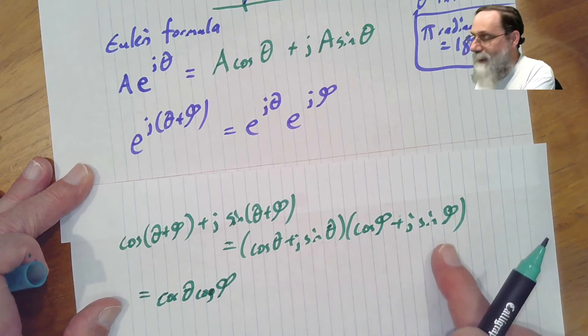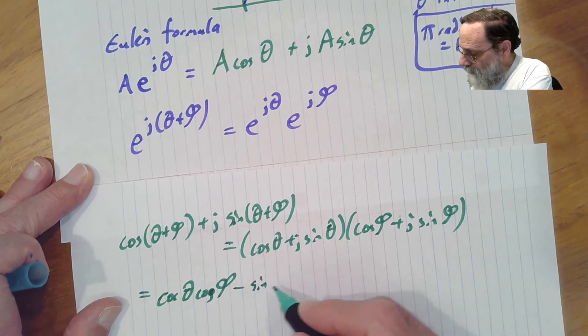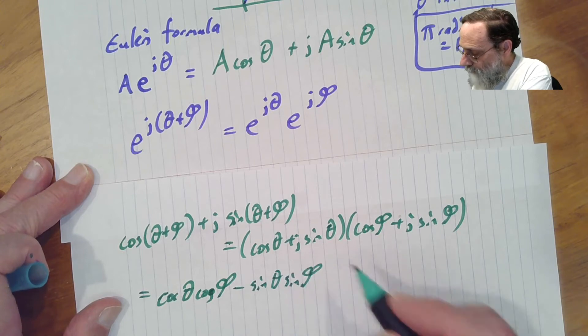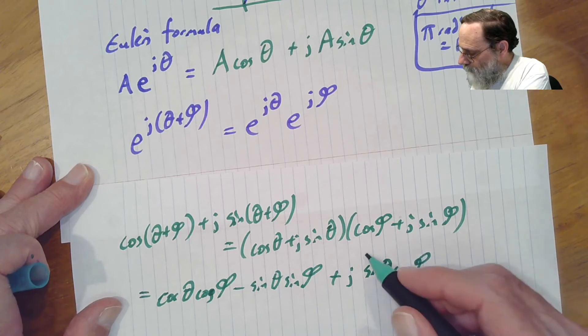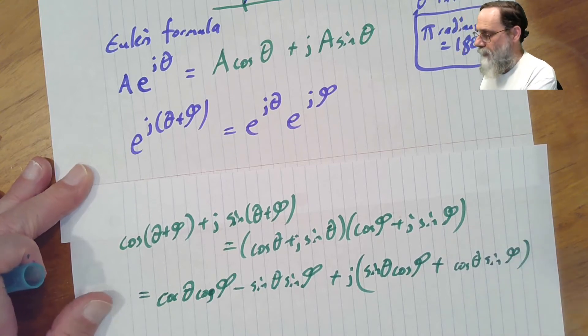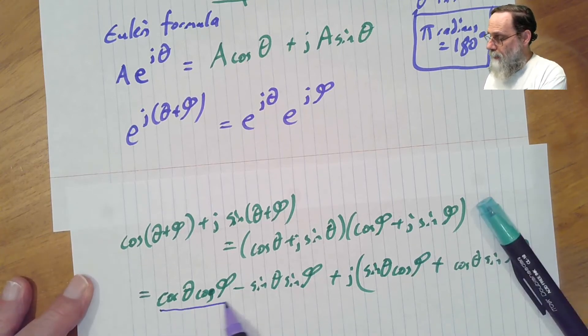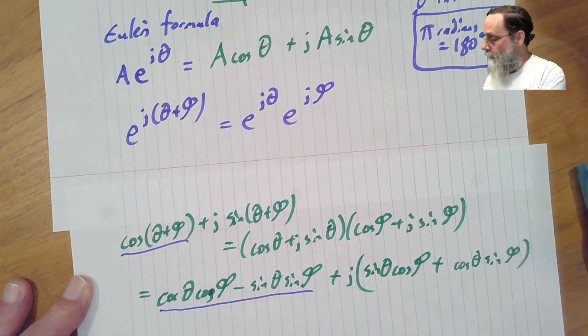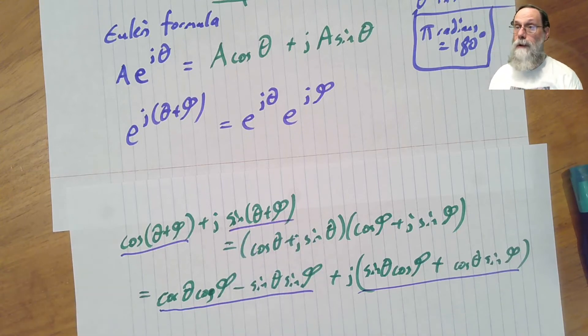And then, now I'll do the two imaginary parts. The j times j is minus one. So I'm just going to get minus sine theta, sine phi. And now I'll do the two cross terms. So I'll have j times sine theta cosine phi, and I'll also have cosine theta sine phi. And what we've got here is the real part is equal to the real part there. The imaginary part here is equal to the imaginary part here. And we've got the formulas, the trigonometric formulas, for cosine of adding two angles or the sine of adding two angles.